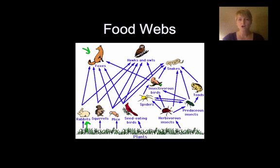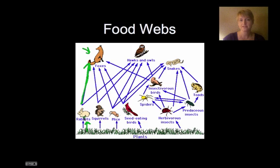Just know that whenever you see a food web and the arrows are pointing up, that means the fox is eating the rabbits — or you could look at it as the rabbit goes into the fox, and that helps you keep track a little bit better.